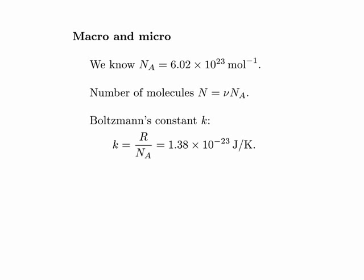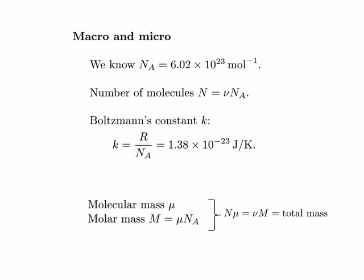Another important constant for microscopic physics is Boltzmann's constant K, which is just the gas constant divided by Avogadro's number. It has the value of 1.38 times 10 to the minus 23rd joules per kelvin. Boltzmann's constant is really important and tells us a lot about the microscopic world. Sometimes it's easier to think in terms of masses — we need the molecular mass (mass of one molecule) and the molar mass (Avogadro's number times that), and their product with the number of molecules or moles gives the total mass of the gas.